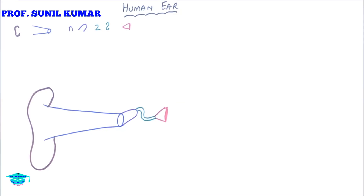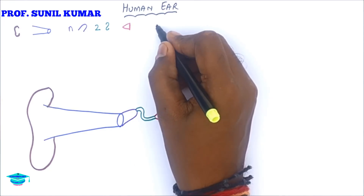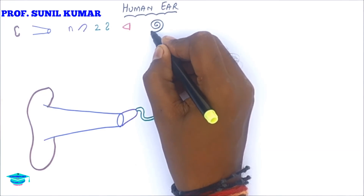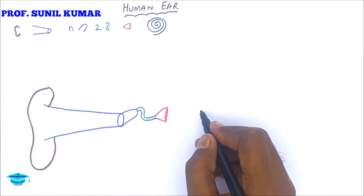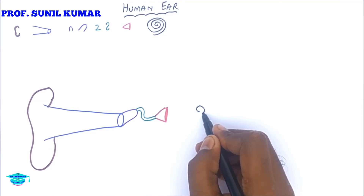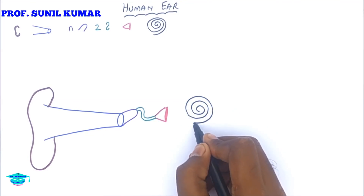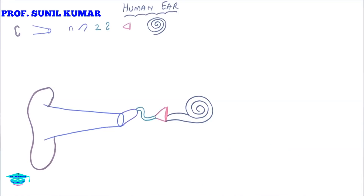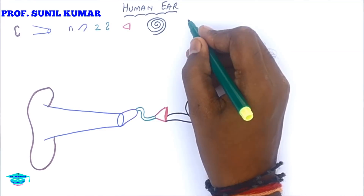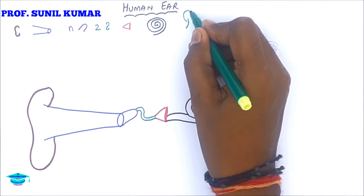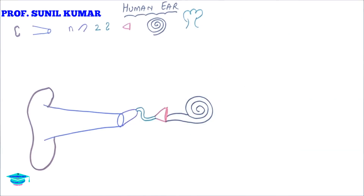Now draw a spiral — like the spiral diagram we used to draw in childhood. Join it together and make it like this — this is the cochlea.